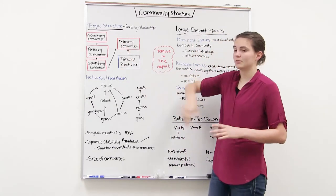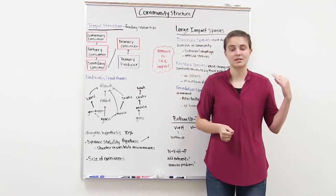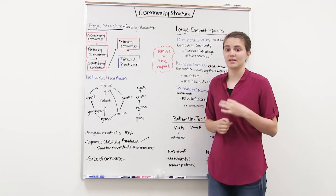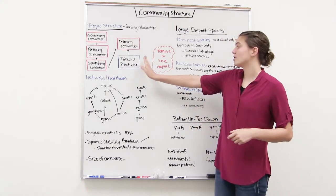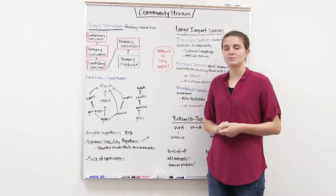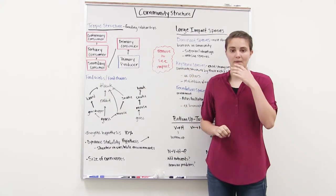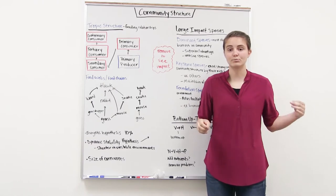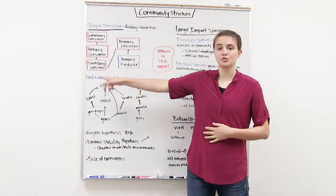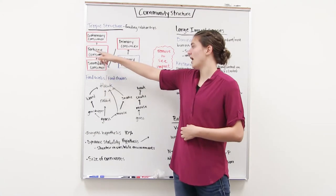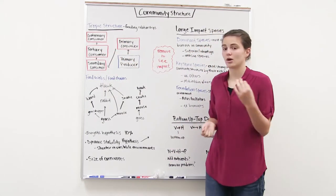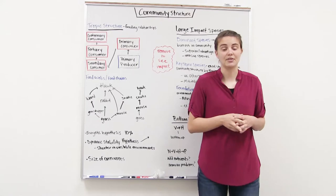We start with our primary producers — the organisms that are doing photosynthesis and producing the sugars and the energy. Those are going to be consumed by our primary consumers, which tend to be herbivores, things that eat plants. Then our primary consumers are consumed by secondary consumers, which go to tertiary and quaternary — things like carnivores that eat other animals.